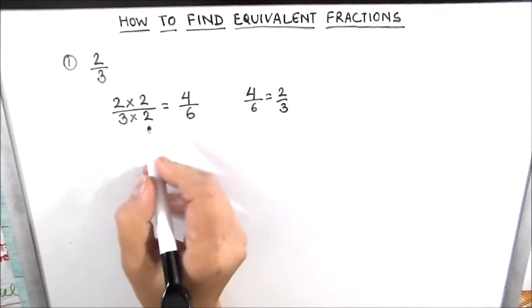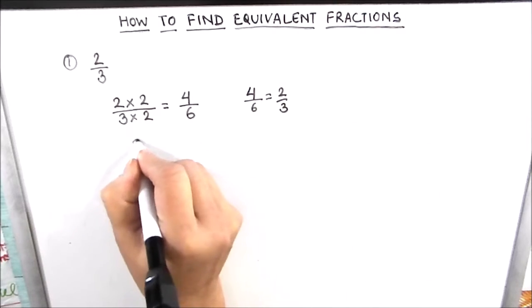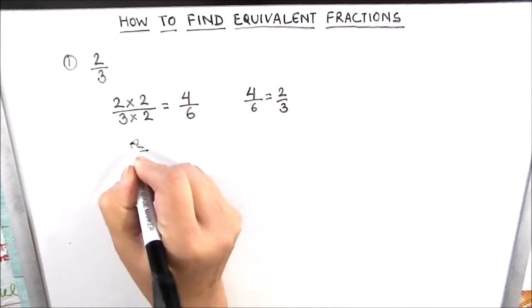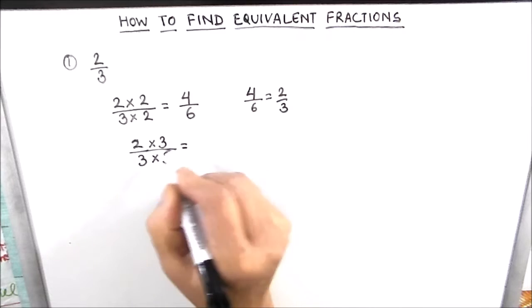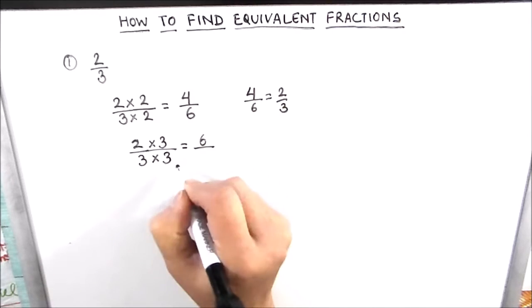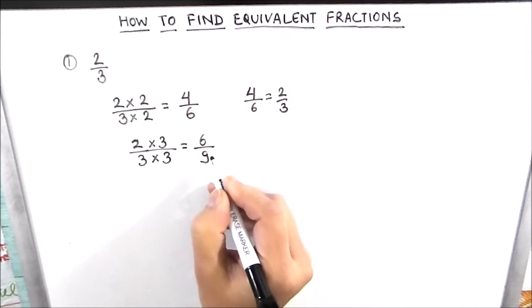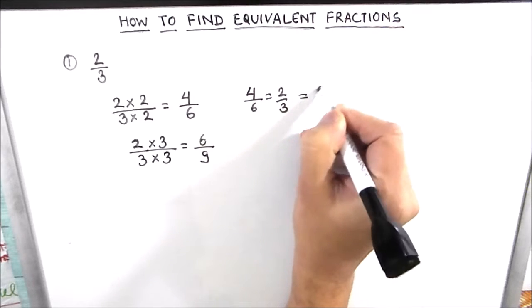If you want to find more equivalent fraction to the same fraction we can multiply it by a different number. Here let us take 3 to multiply and divide. So this is 2 times 3 is 6 and 3 times 3 is 9. So 6 by 9 is also equivalent to 2 by 3.